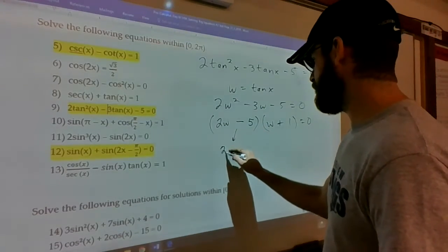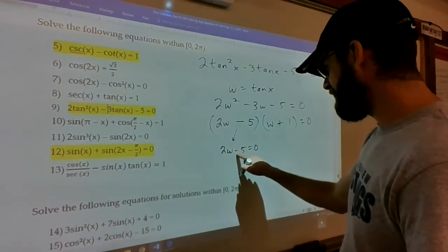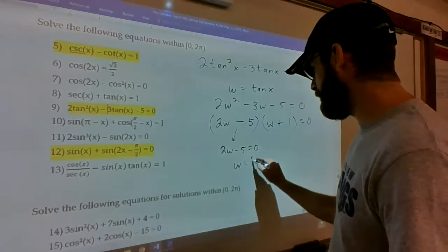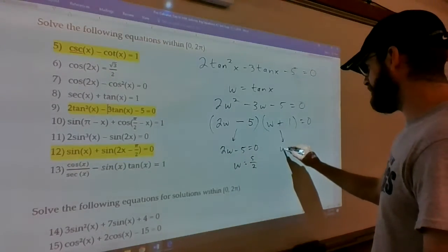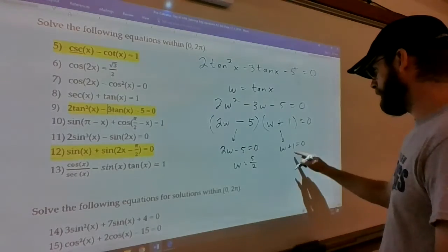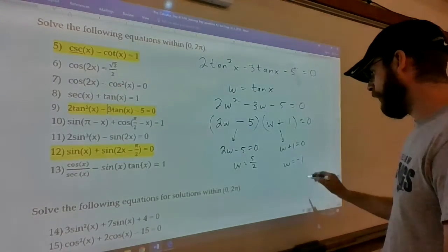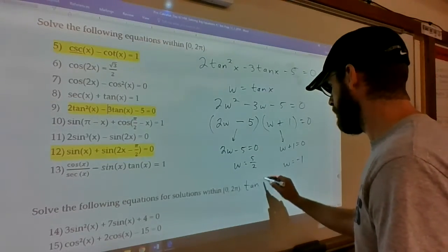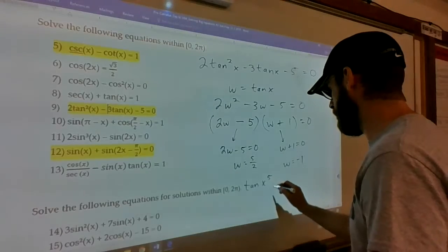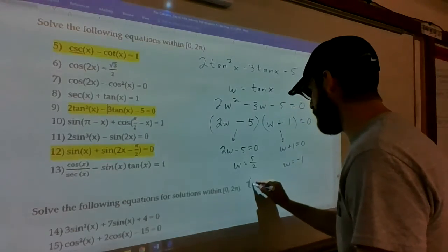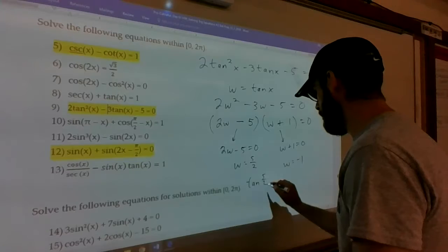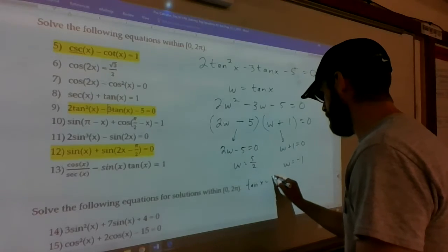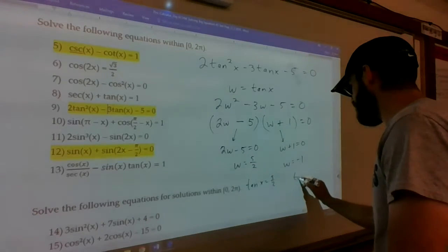This gives me 2w - 5 = 0. Add the 5. Divide by 2. You get w = 5/2. Over here, you get w + 1 = 0, minus the 1. You get w = -1. These are actually tangents though. Tangent of x = 5/2. Oh, my goodness. Help me. And, tangent of x = -1.